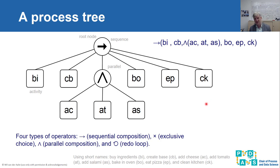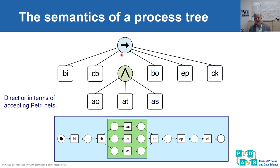In this pizza example, the behavior is exactly the same as before: buying ingredients, creating a pizza base, then concurrently adding the three toppings in any order using the parallel composition operator, then baking the pizza, eating it, and cleaning the kitchen. The tree can also be represented in a more compact form: a sequence of six elements where one element is a subtree with an AND node connecting the three topping activities. It is easy to map process tree semantics onto a Petri net.